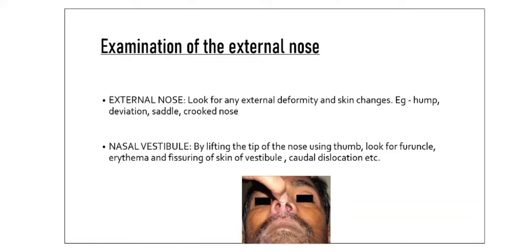Examination of the external nose: first, look for any external deformities and skin changes, for example any hump, any deviation, a saddle — saddle means a broken nasal septum or nasal bridge — or a crooked nose where the nose does not follow a straight vertical line along the central of the face.